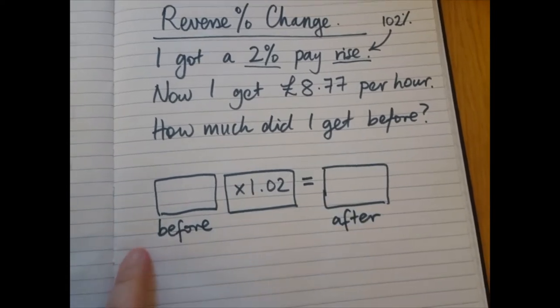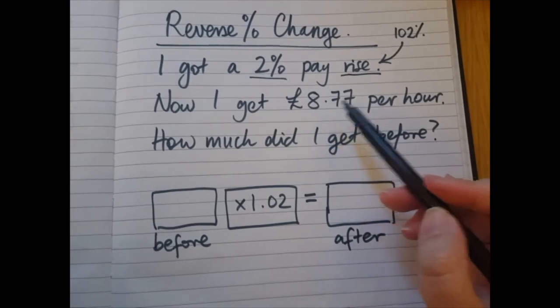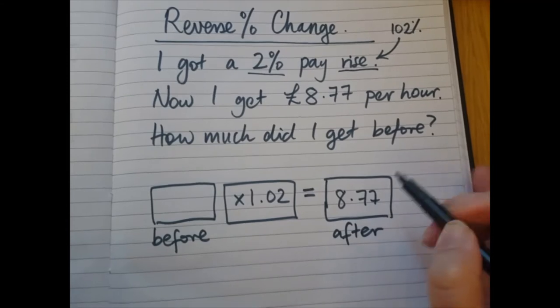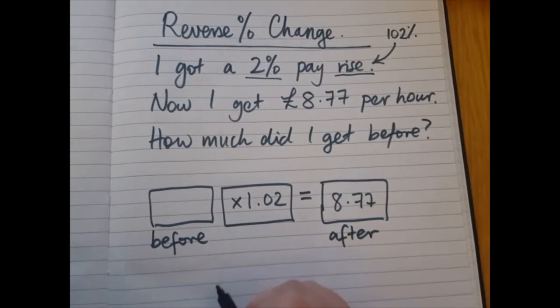So in this equation, remember we go forwards in time. 8.77, that's the amount which is after the pay rise. So I'm going to go backwards in time to work out the amount which was before.